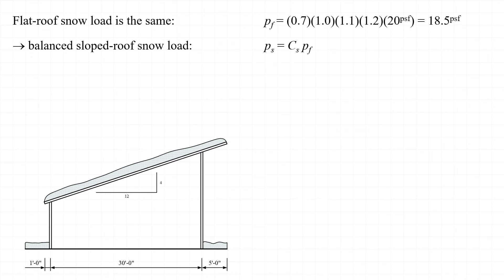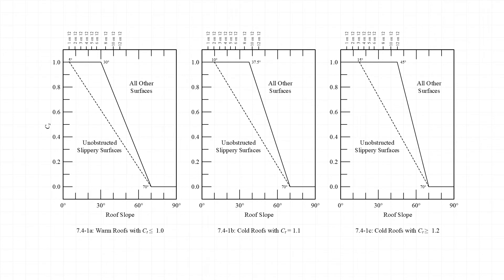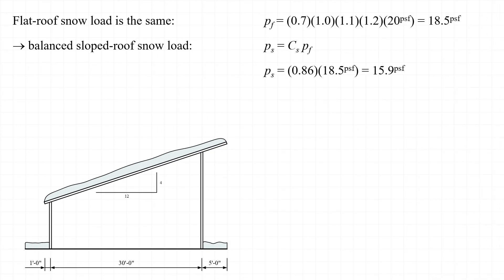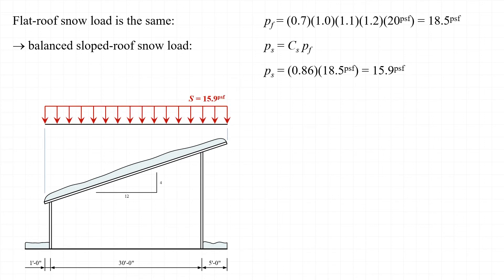Next, we'll determine the sloped roof snow load by first determining the roof slope factor C sub s. Returning to figure 7.4-1b, with a 4 on 12 pitch, C sub s is approximately 0.86. Note that with a sheet metal roof, we use the dashed line corresponding to an unobstructed slippery surface. Substituting into the equation, the sloped roof snow load P sub s is equal to 15.9 pounds per square foot, applied to the horizontal projection of the roof.